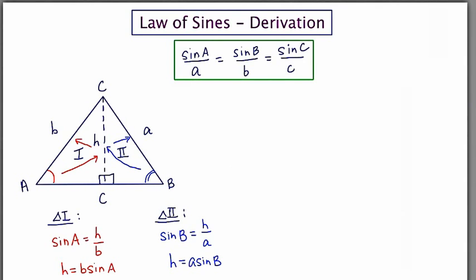Because these expressions are both equal to h, we can set them equal to each other. So b sine A equals a sine B. You might notice it's starting to look like what we want, which is the formula in the green box.